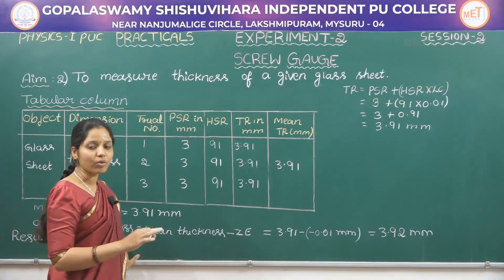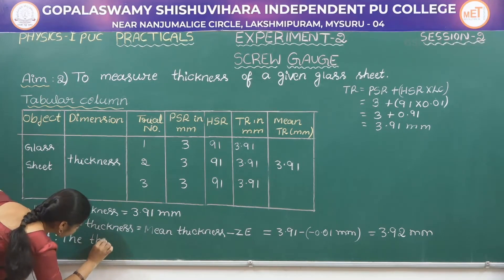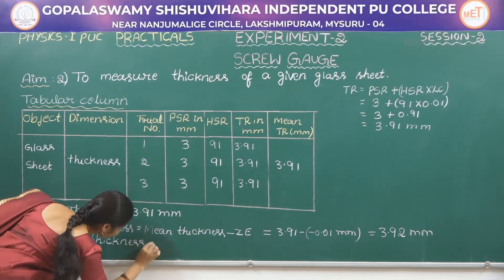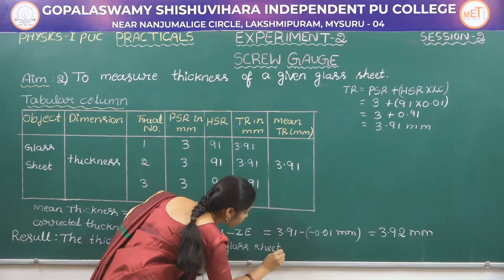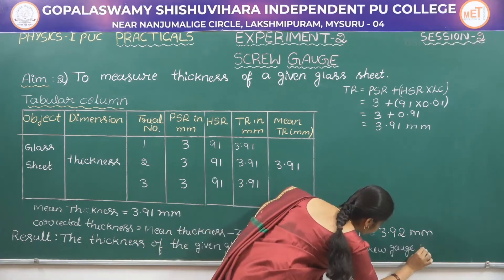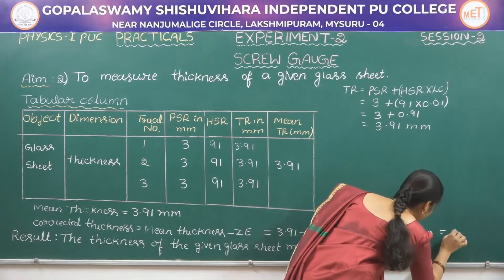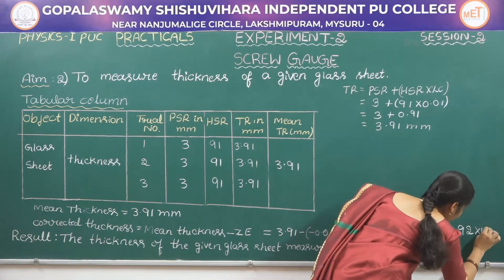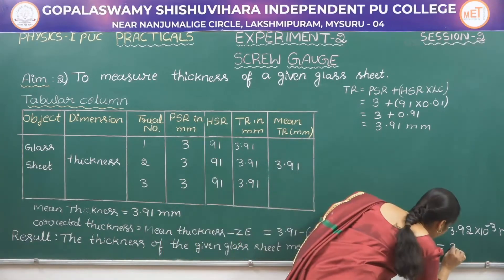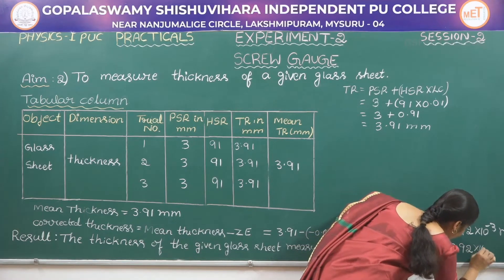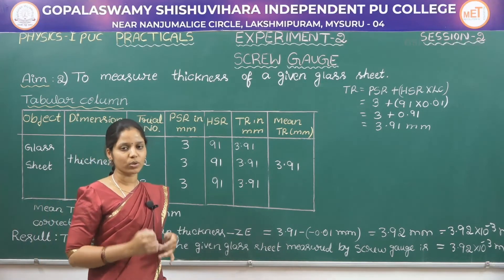The corrected thickness of the given glass sheet is 3.92 millimeters. For the result, we must write in SI units. The thickness of the given glass sheet measured by screw gauge is 3.92 into 10 power minus 3 meter. In this way we can measure the thickness of a given glass sheet using screw gauge.